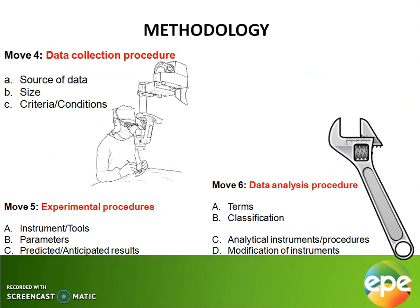The methodology section of a scholarly written article contains three moves: move four, move five, and move six. Move four helps you understand the data collection procedure — what are the sources of the data, what are the sizes of the data, as well as the criteria and conditions under which this data has been collected.